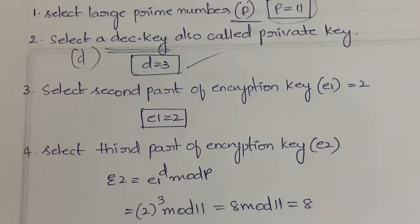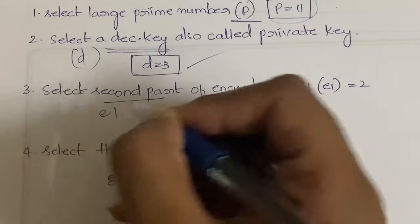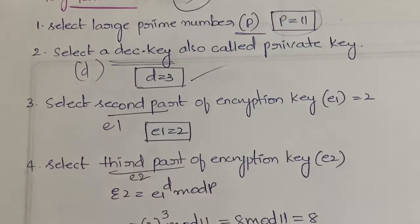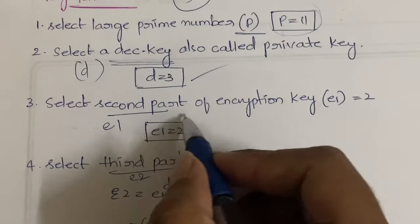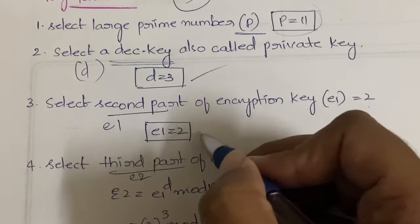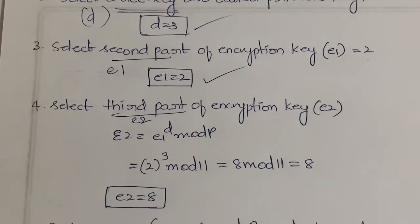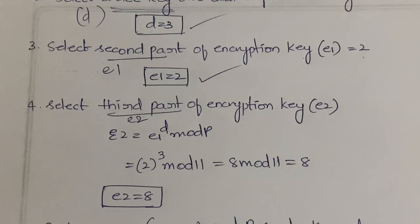In the third step, you have two parts of the encryption key: e1 and e2. The second part of the encryption key is denoted e1, and the third part is denoted e2. You need to first select e1 — we have selected e1 = 2.